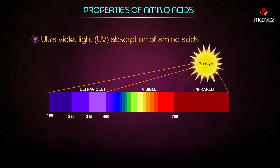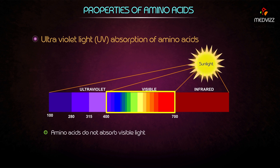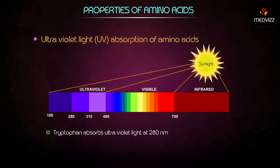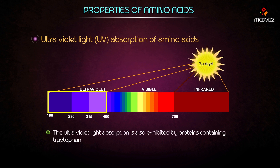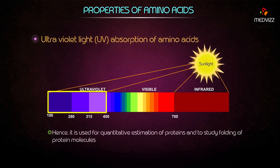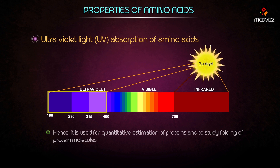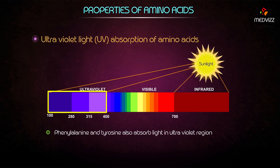Ultraviolet light absorption of amino acids: amino acids do not absorb visible light. Aromatic amino acids absorb ultraviolet light — tryptophan absorbs UV light at 280 nanometers. This UV absorption is also exhibited by proteins containing tryptophan, and is used for quantitative estimation of proteins and to study protein folding. Phenylalanine and tyrosine also absorb light in the ultraviolet region.